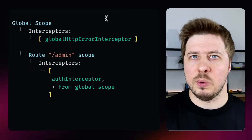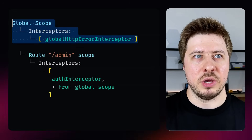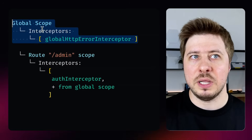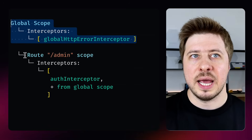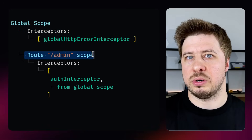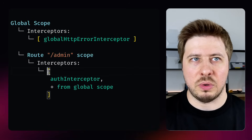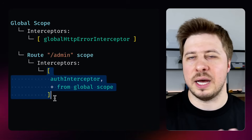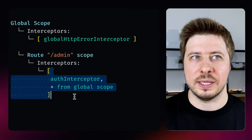So eventually we would like to have the following hierarchy where you have some global interceptors like HTTP error handling, and under a specific route you want to apply other interceptors in addition to the global ones. So let's figure out how to achieve that and let's get started!